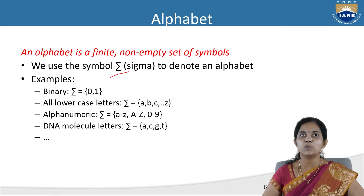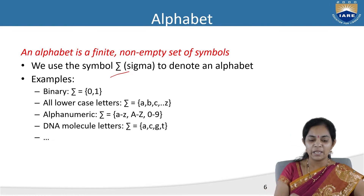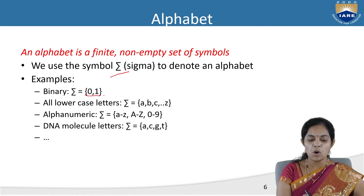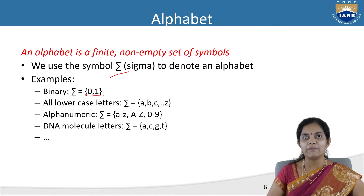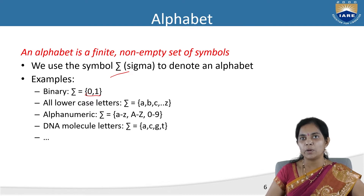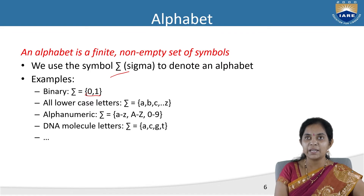Here we have examples. First is binary, which has 0 and 1 as the alphabet: Σ = {0, 1}. Another example is all lowercase letters: Σ = {a, b, c, ..., z}.